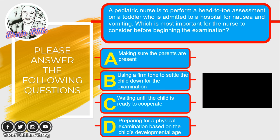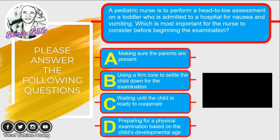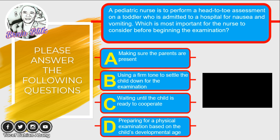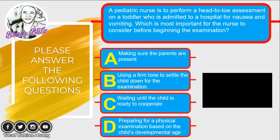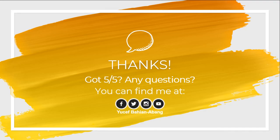Question five: A pediatric nurse is to perform a head-to-toe assessment on a toddler admitted to the hospital. Which is most important for the nurse to consider? — D: preparing for a physical examination based on the child's developmental age. When assessing a child, it is very important to go down to the level of that child and assess based on his or her developmental age. The best answer is letter D. Thanks for scoring five out of five! Don't forget to subscribe and click the notification button for our next videos.